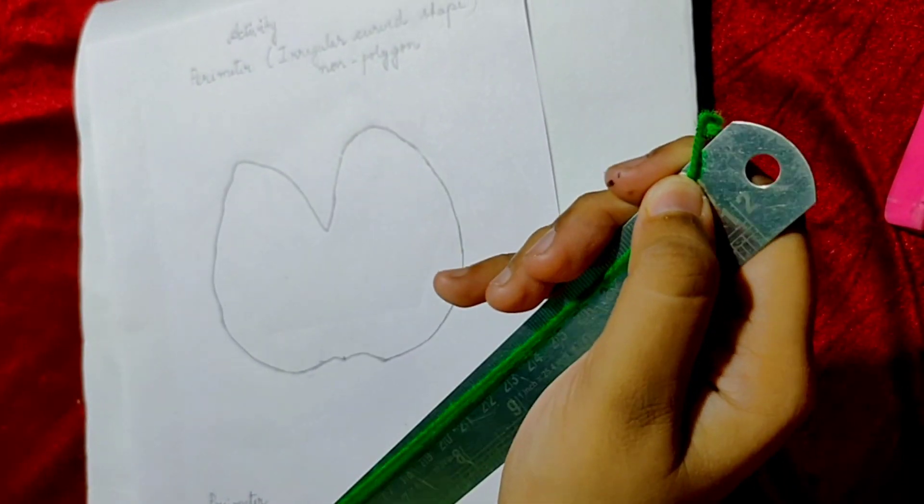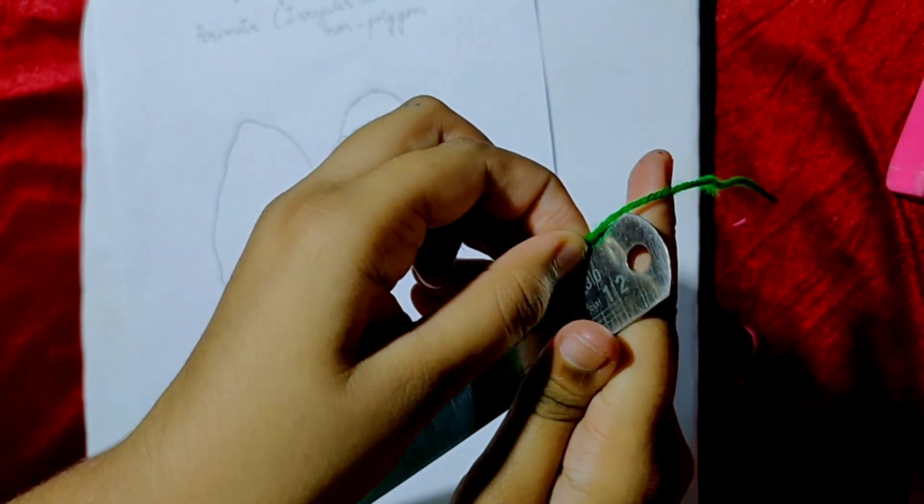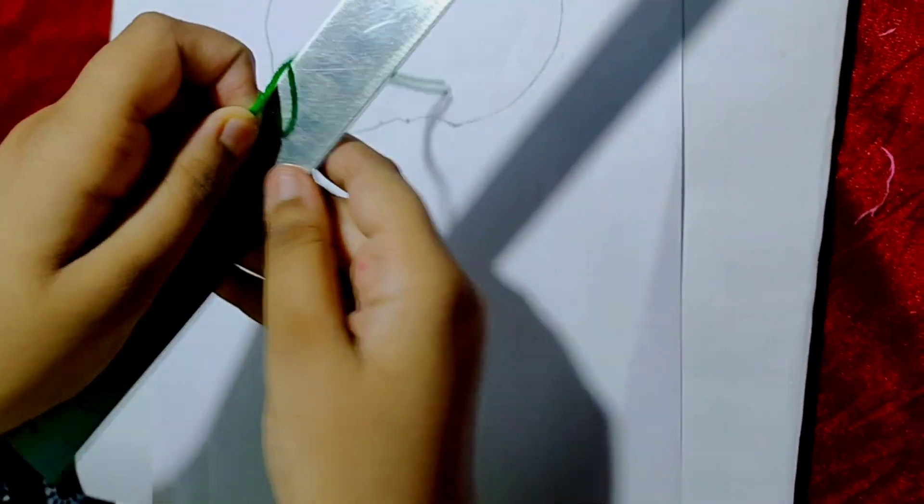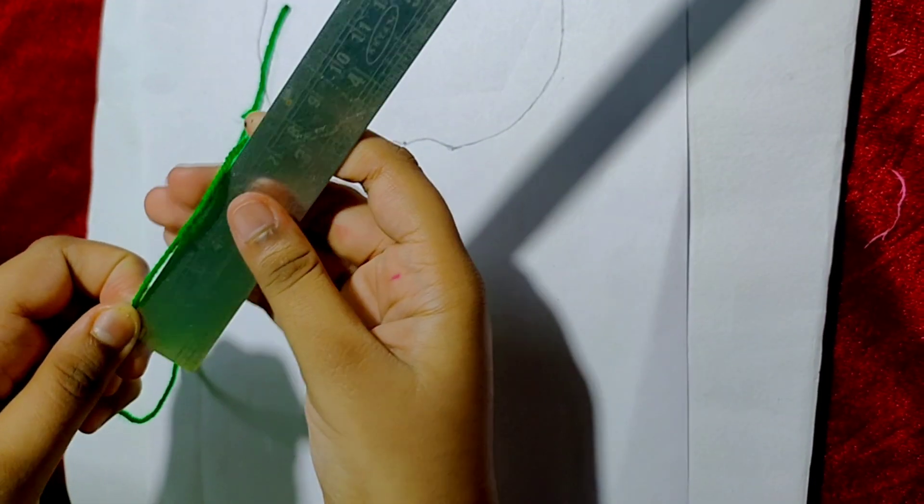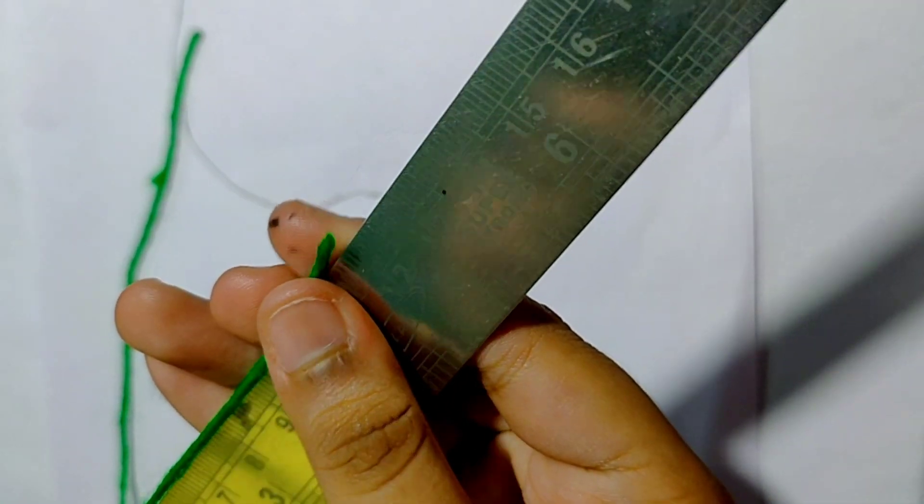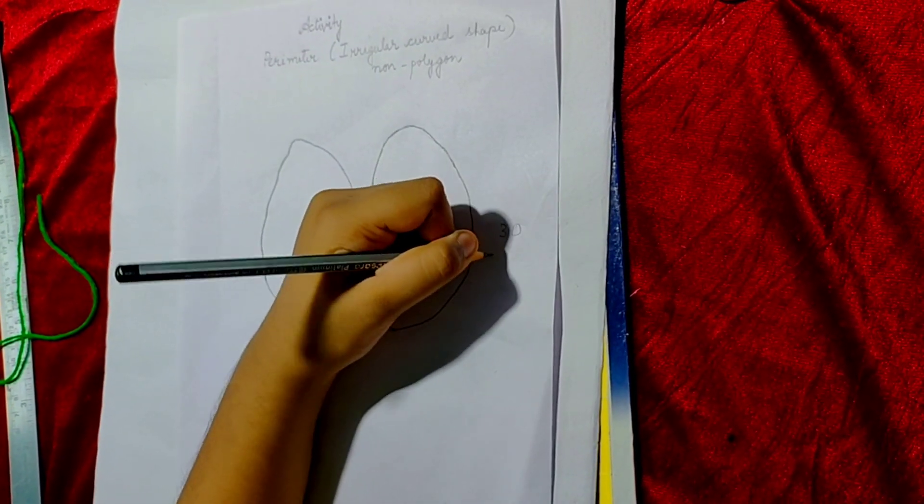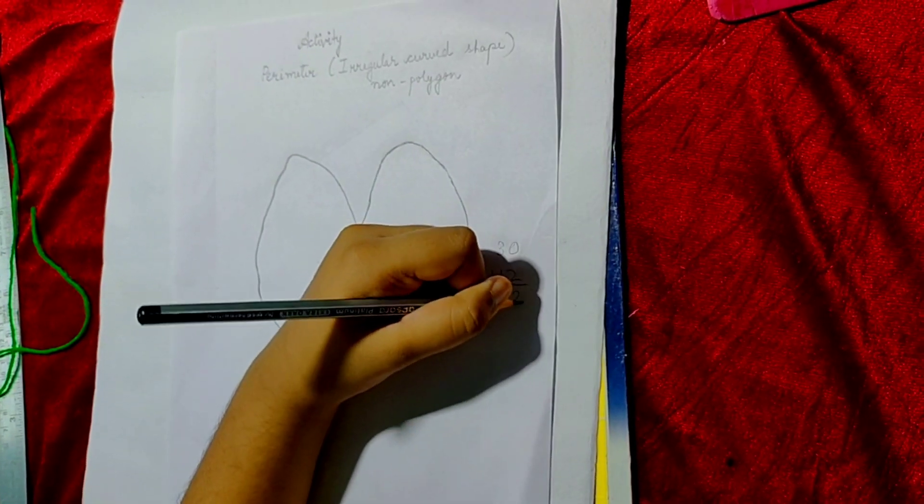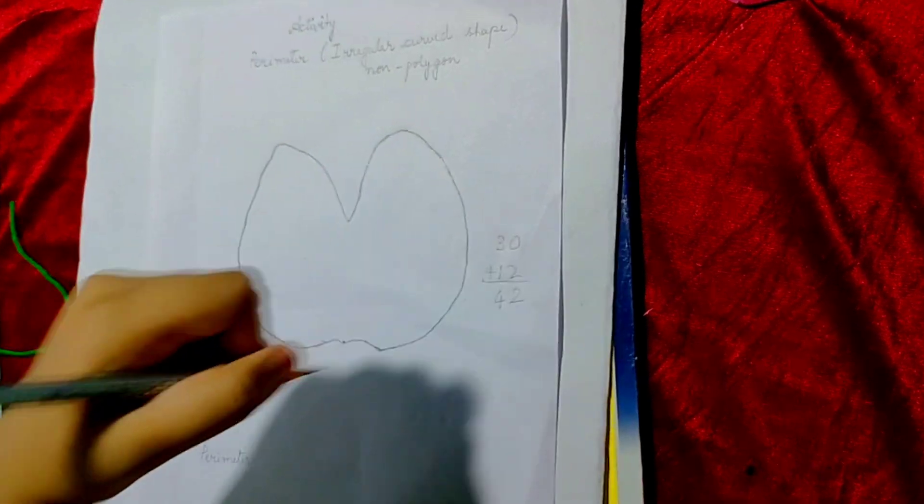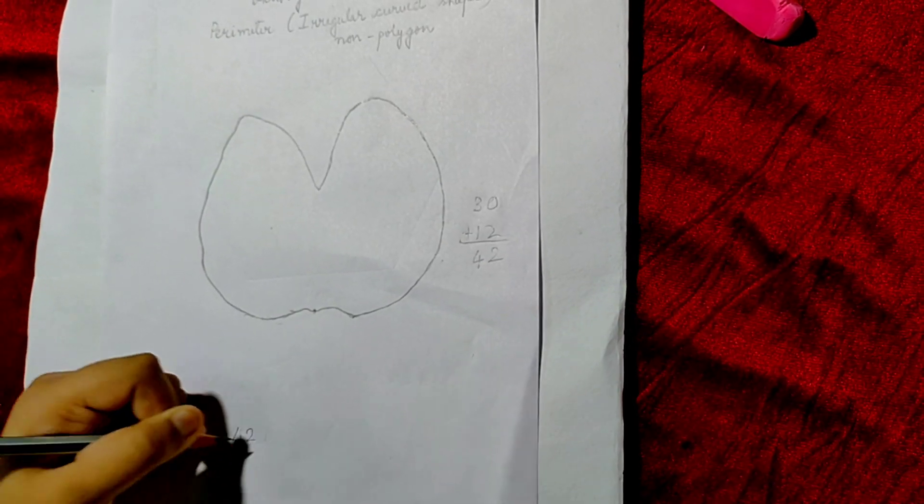From here to here it is 30. From here to here it is 12. Let us write the measurement: 30 plus 12 equals 42. So the perimeter is equal to 42 centimeters.